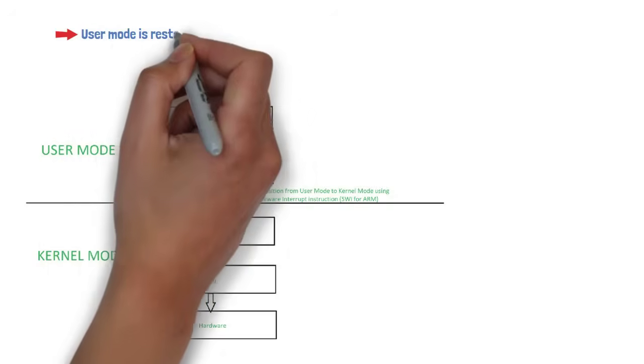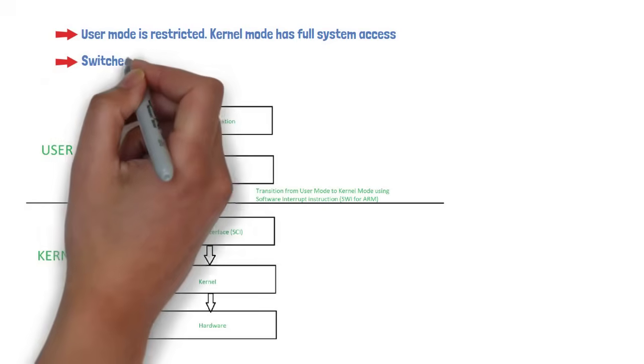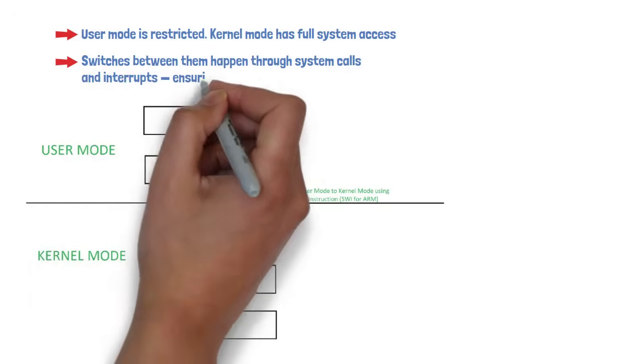User mode is restricted. Kernel mode has full system access. Switches between them happen through system calls and interrupts, ensuring security and control.